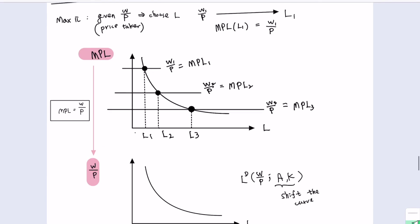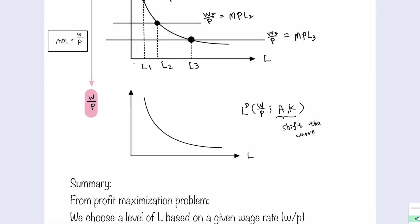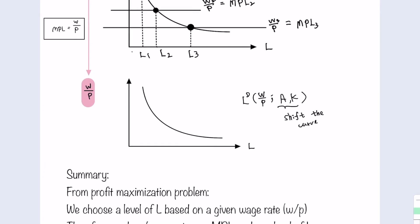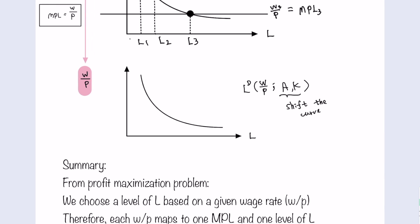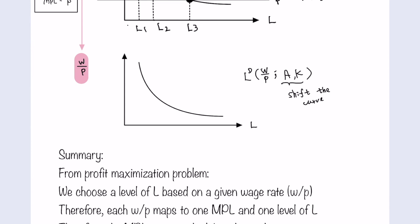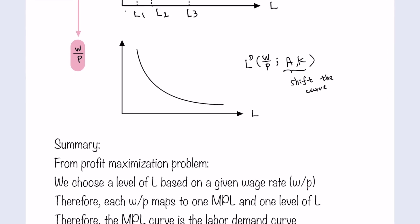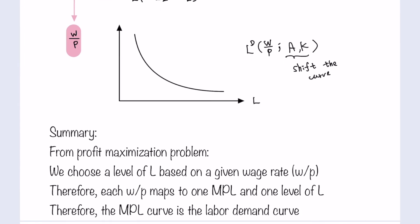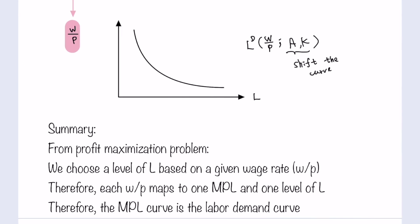In conclusion, from the profit maximization problem, we choose the level of labor input based on a given real wages W/P. Each real wages maps to one marginal product of labor and one level of labor input. Therefore, the marginal product of labor curve becomes the labor demand curve. That is how we derive the labor demand curve.